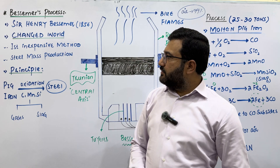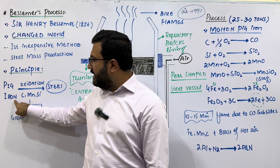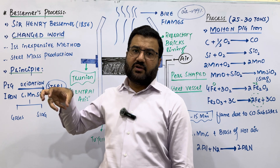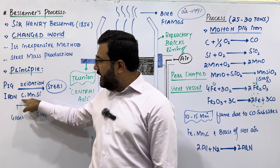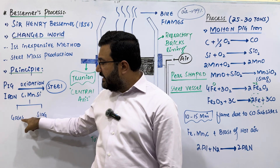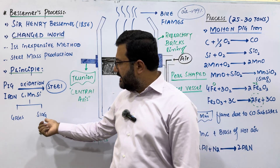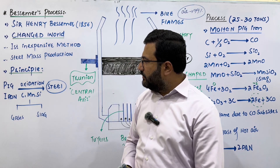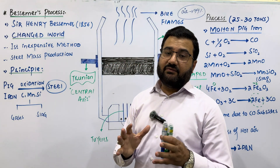The principle of the Bessemer process is to convert pig iron into steel. Pig iron is obtained from the blast furnace — it is the most impure form of iron. The pig iron is oxidized with the help of air, and impurities like carbon, manganese, and silicon are oxidized and removed from the pig iron either in the form of gases or as leftover material called slag. Slag is the leftover once the pure metal is extracted from its ore.